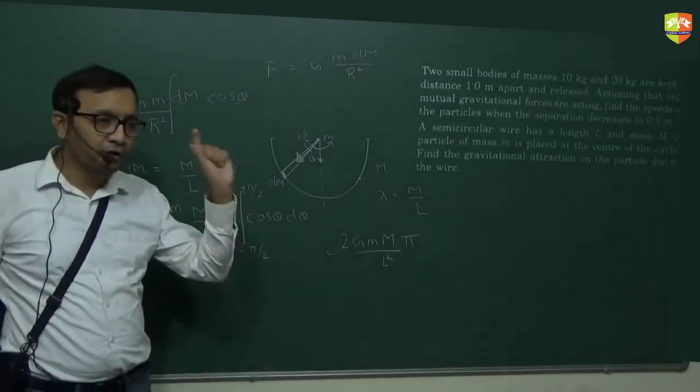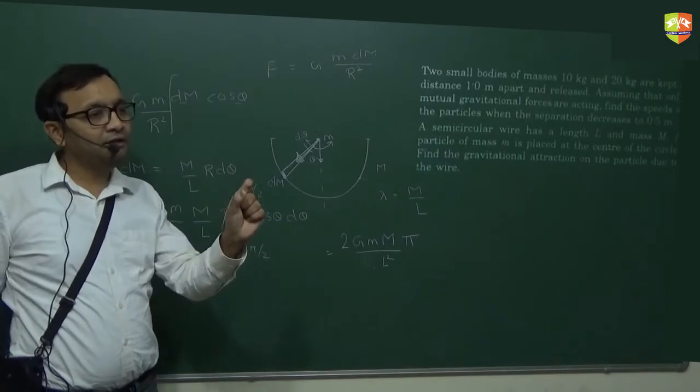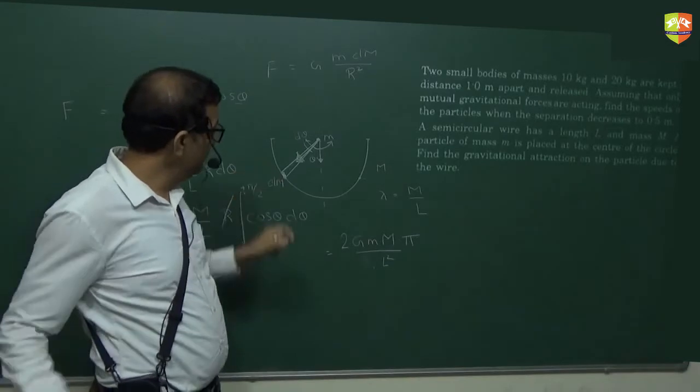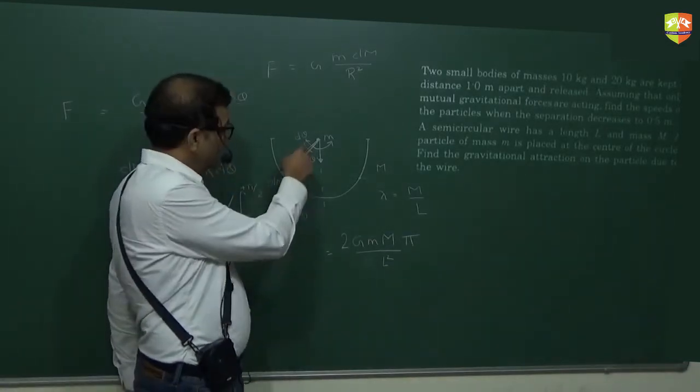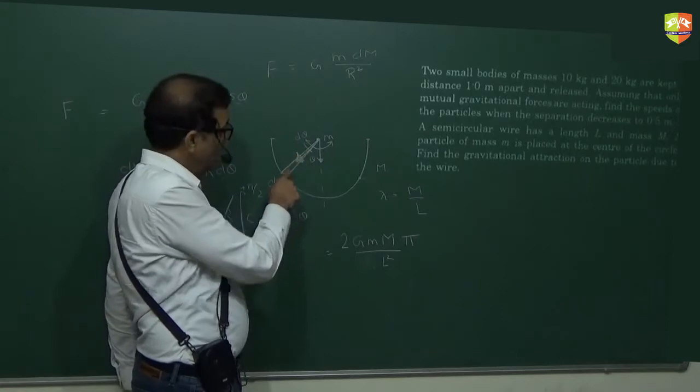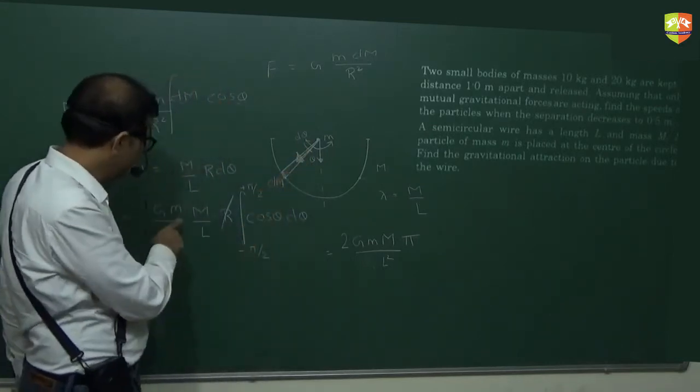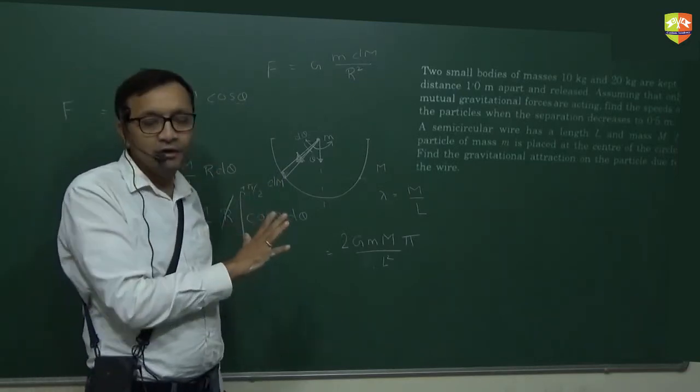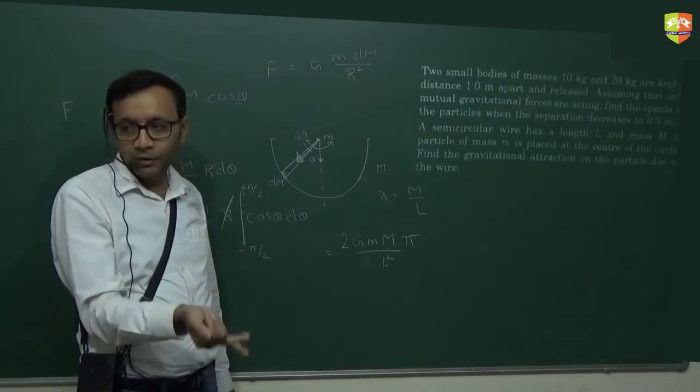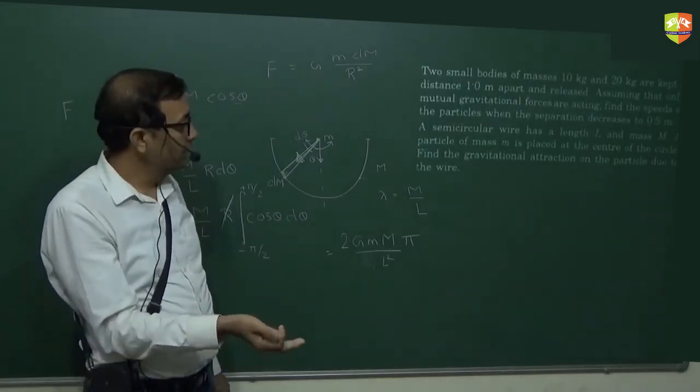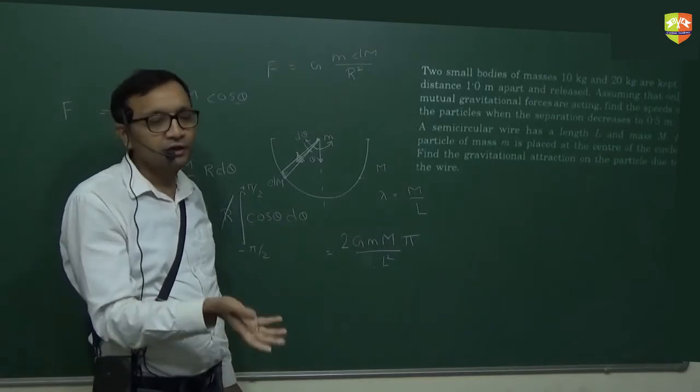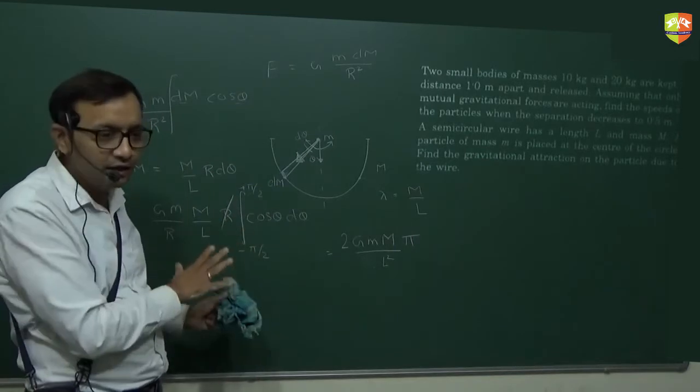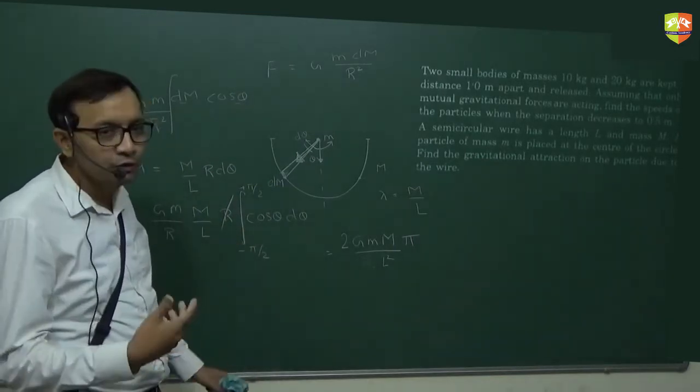m by l is mass per unit length. If I multiply that with a length, I will get mass of that length. So if this is my dm, the length of this dm is how much? r d theta. r d theta is the length. So r d theta if I multiply with mass per unit length, I will get mass of that length. This kind of standard process we have followed everywhere. Be it centre of mass, moment of inertia, and wherever we have done to find potential or field. Every time we do like this only. Whenever we see circle or a sphere, d theta and all that. You should get used to of these kinds.